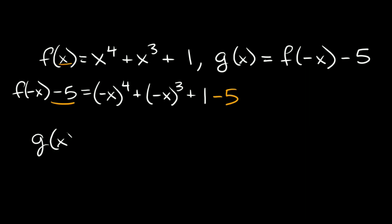So g of x is equal to — now, whenever you have a negative variable raised to an even power, like two, four, six, eight, ten, that turns it positive. So negative x to the fourth is the same thing as positive x to the fourth when you simplify. And then here we have negative x raised to an odd power, so it stays negative — so minus x cubed. And then one minus five is equal to negative four, so we just have minus four. So this is our g of x for this problem.